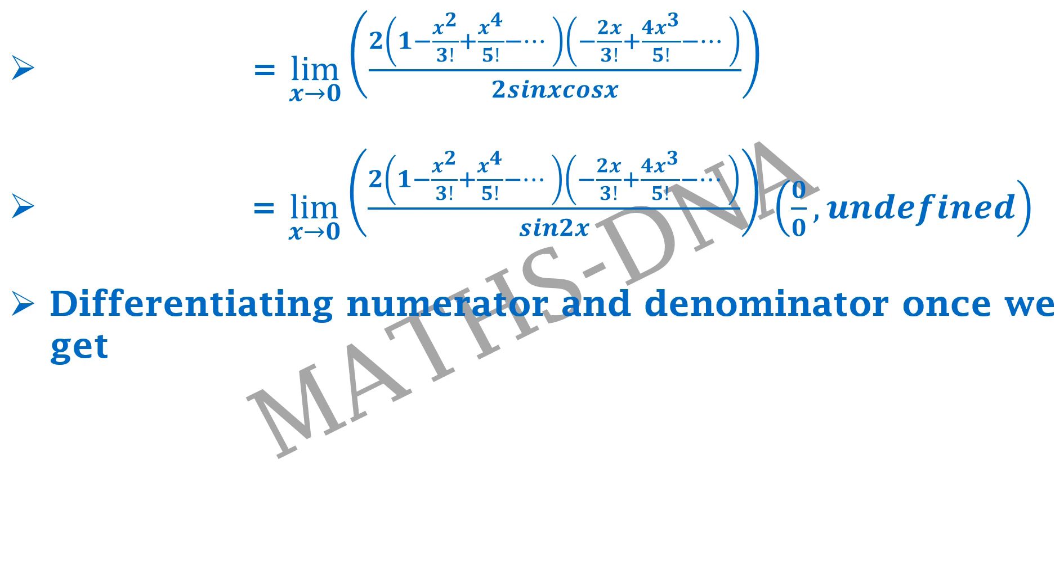So we need to again differentiate the numerator and denominator. That will give us limit x tends to 0, minus 4 upon 3 factorial plus the remaining term that will be containing x. The only first term that will not contain x will be minus 4 upon 3 factorial. You can easily get this term simply multiply 2 with the first term and then multiply that term with minus 2x upon 3 factorial, and taking the differentiation it will give us minus 4 upon 3 factorial.